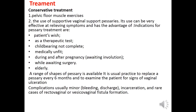Conservative treatment includes pelvic floor muscle exercises and the use of supportive vaginal pessaries, which can be very effective at relieving symptoms. Indications for pessary treatment include patient wish, as a therapeutic test, incomplete childbearing, medically unfit patients, during and after pregnancy, while awaiting surgery, and in elderly patients. Pessaries should be replaced every six months with examination for vaginal ulceration. Complications are usually minor — bleeding, discharge, incarceration, and rare cases of rectovaginal or vesicovaginal fistula formation.